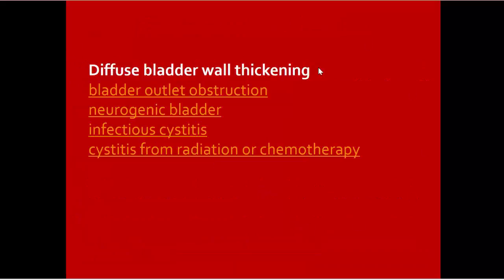Diffuse bladder wall thickening causes include bladder outlet obstruction, neurogenic bladder, infectious cystitis, and cystitis from radiation or chemotherapy.